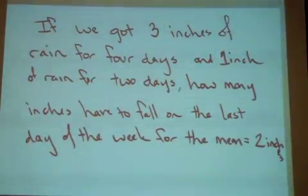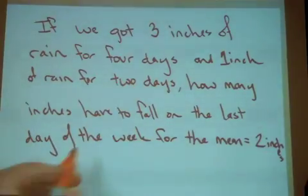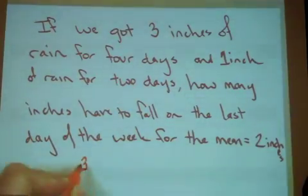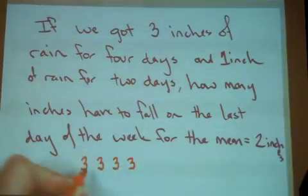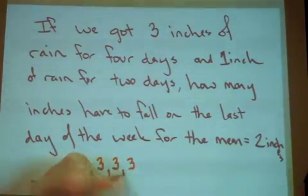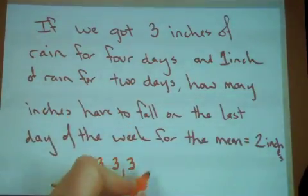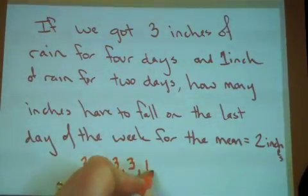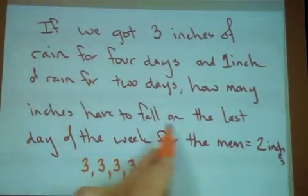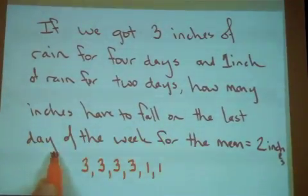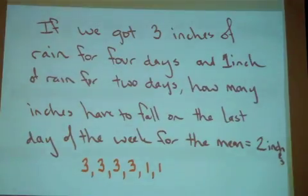If we get three inches of rain for four days — so that's four threes — and one inch of rain for two days — so that's two ones — how many inches have to fall on the last day of the week for the mean to be two inches?